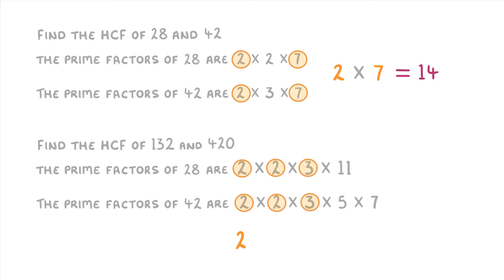So, we multiply 2 times 2 times 3, which gives us 12 as our highest common factor.